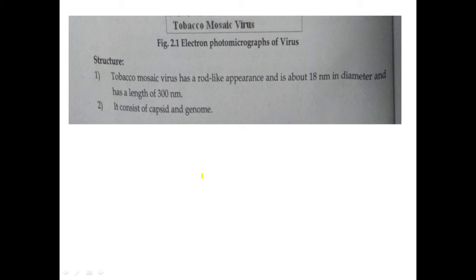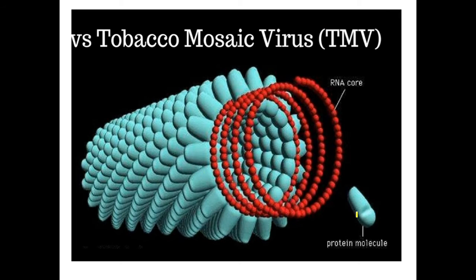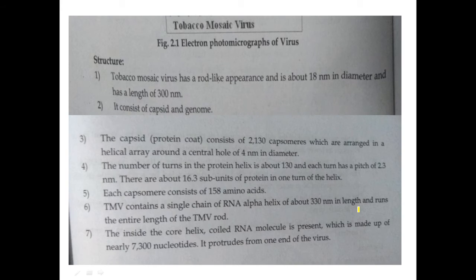The Tobacco Mosaic Virus has a rod-like appearance. It is nearly 18 nanometers in diameter and has a length of 300 nanometers. It consists of a capsid and a genome — because it has RNA, it has its own genome. The capsid is made up of a particular type of protein and consists of 2130 capsomers.